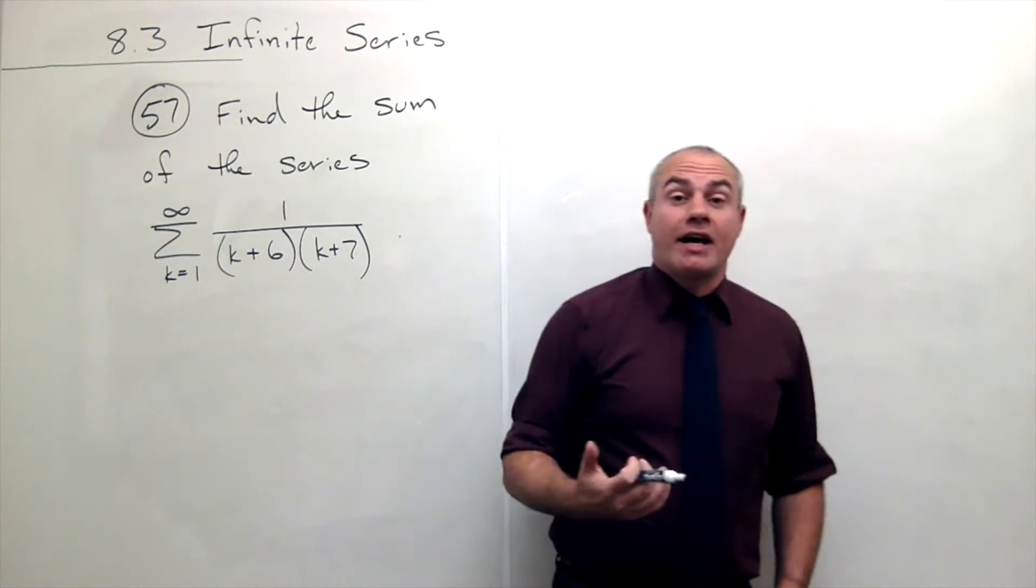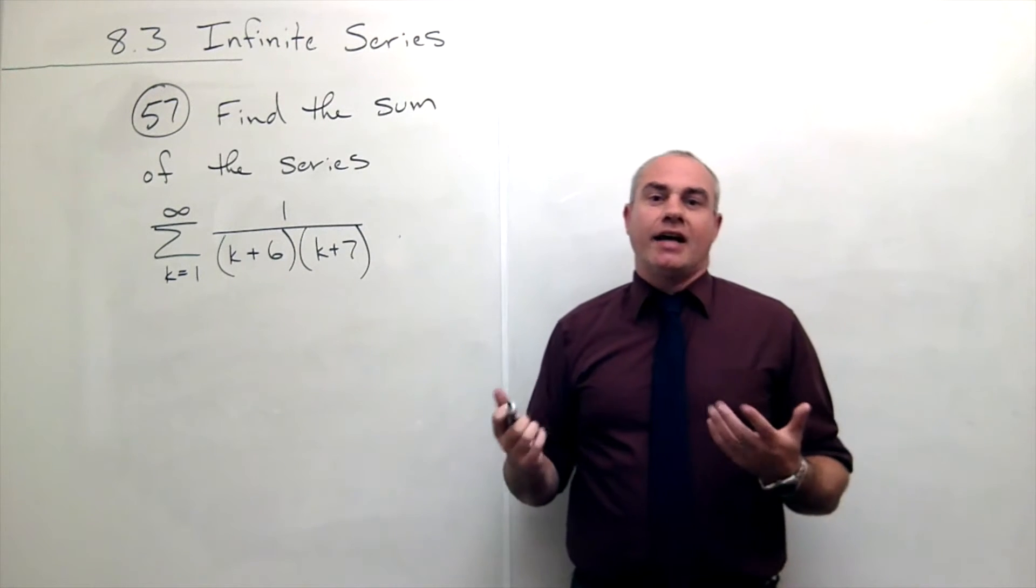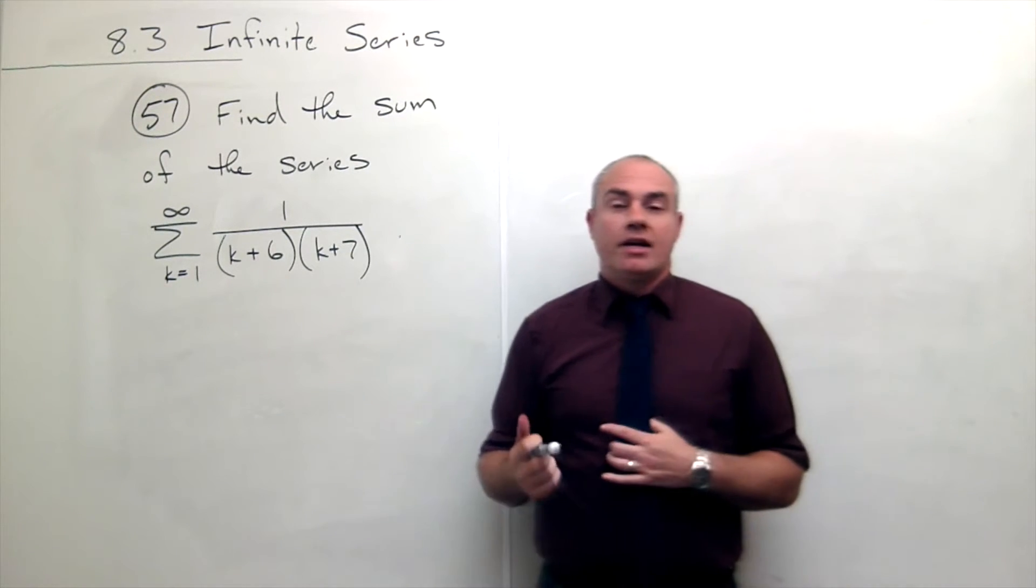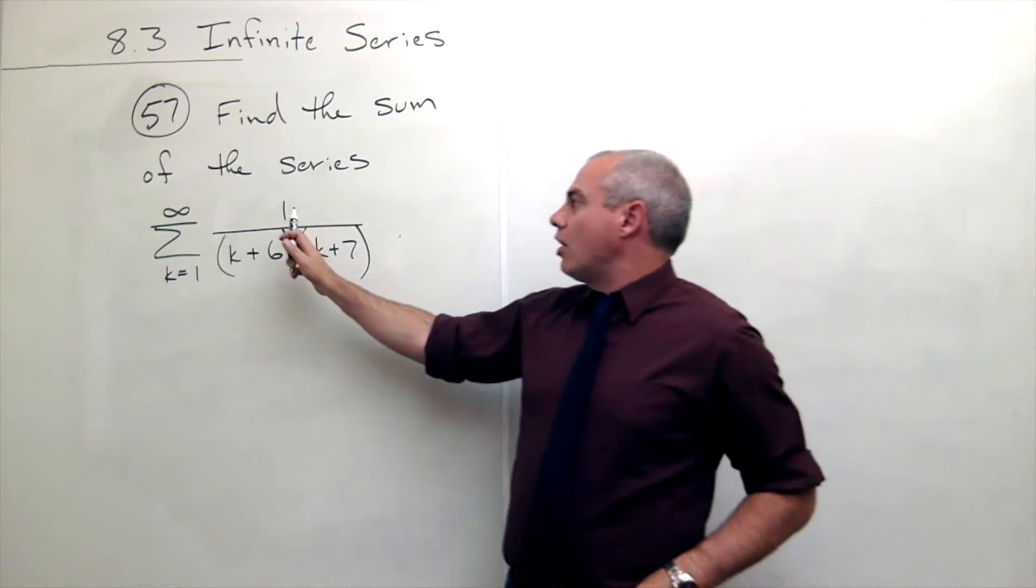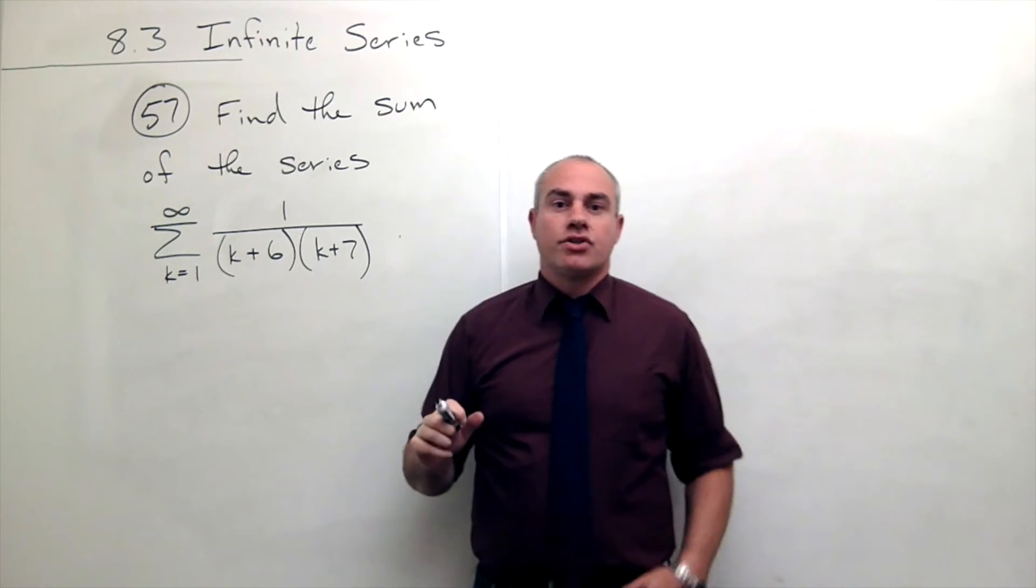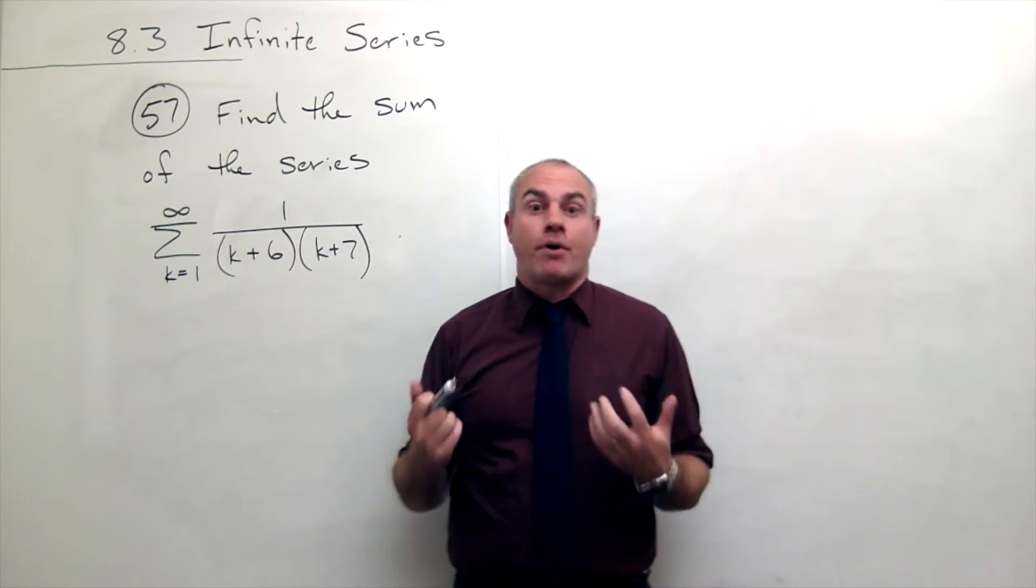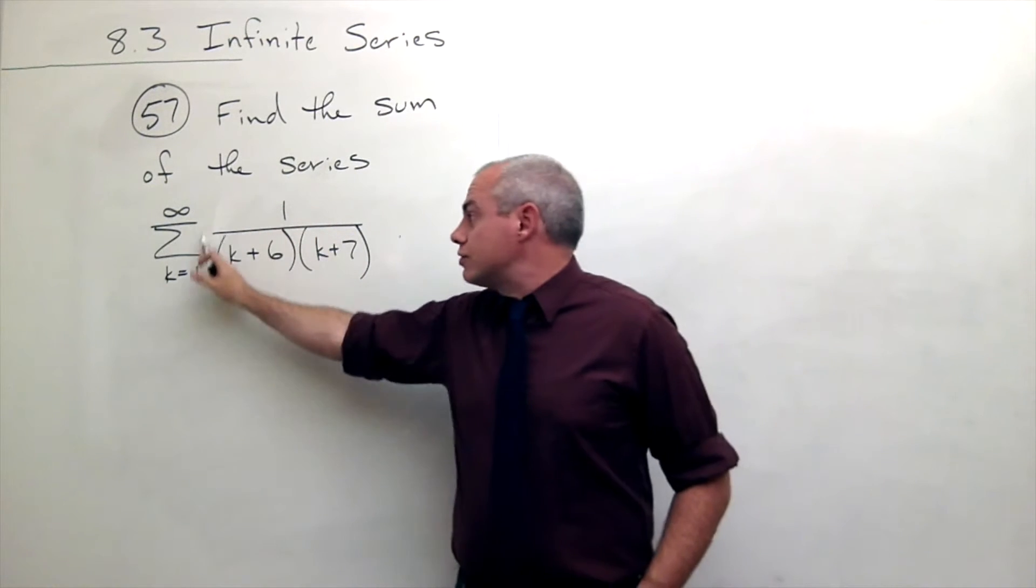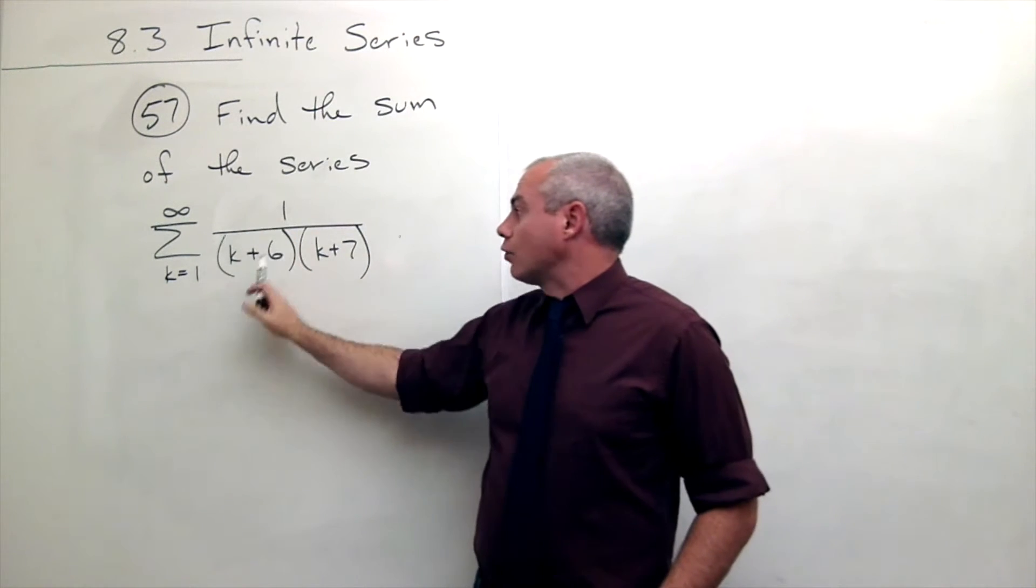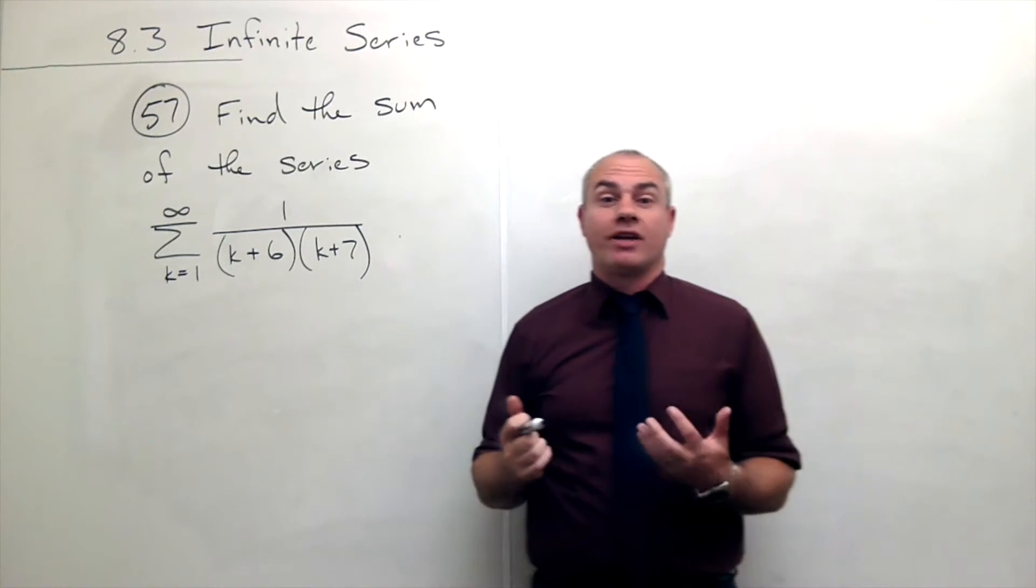Now I could write out a few terms of this series, but very quickly we would see it kind of looks like a mess. So what I'm going to do is I see this is 1 over a linear times a linear. So maybe I could break this up into two different fractions using partial fractions. Let's use partial fractions on 1 over (k plus 6) times (k plus 7) and maybe that will give me direction.